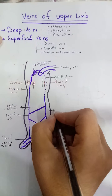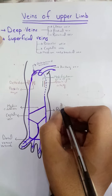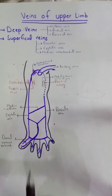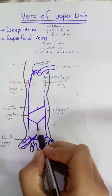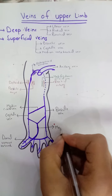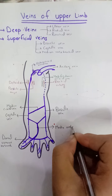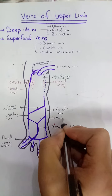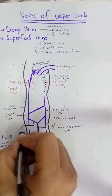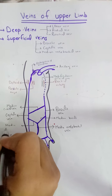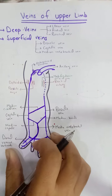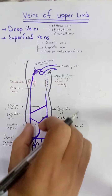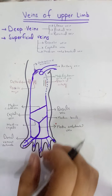In the forearm it will divide into two parts: the median basilic and the median cephalic. This is the complete diagram of the superficial veins of the upper limb. The lymph nodes will also accompany these two veins, which will be discussed in a separate video.